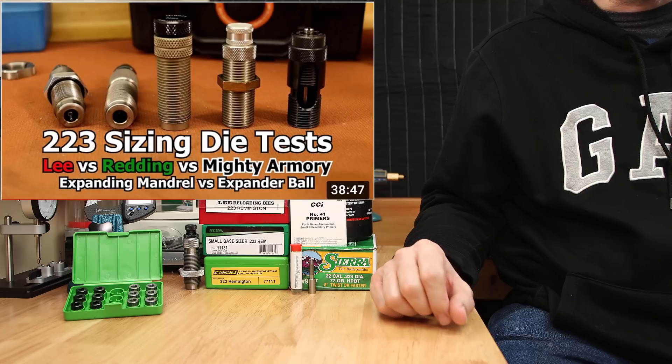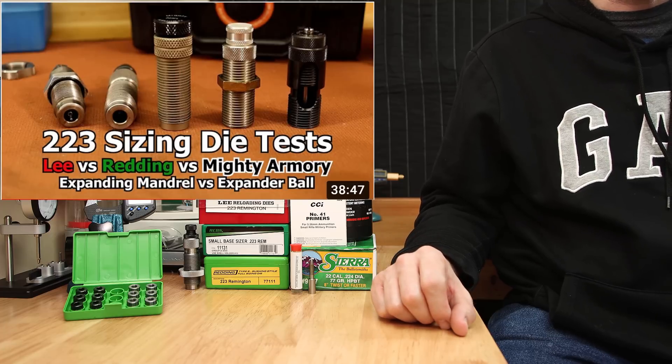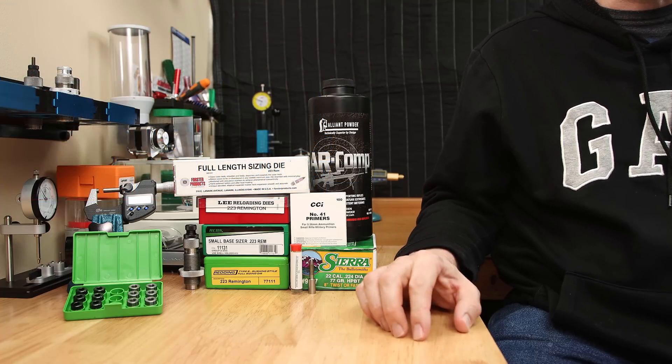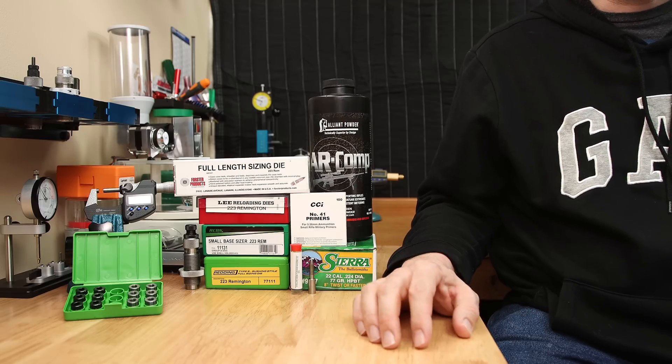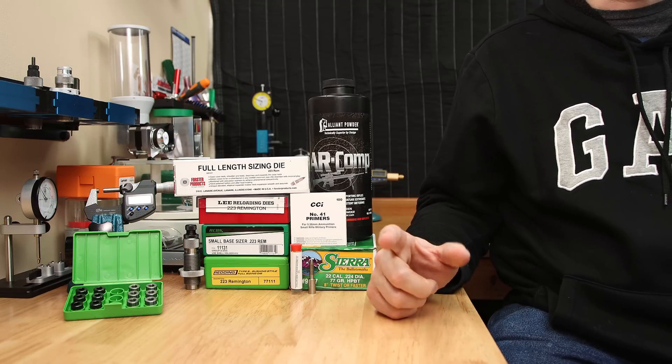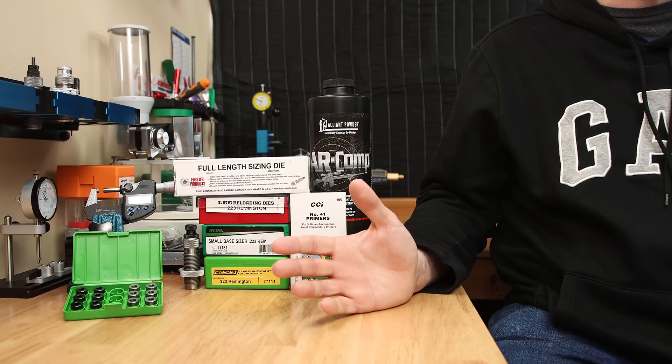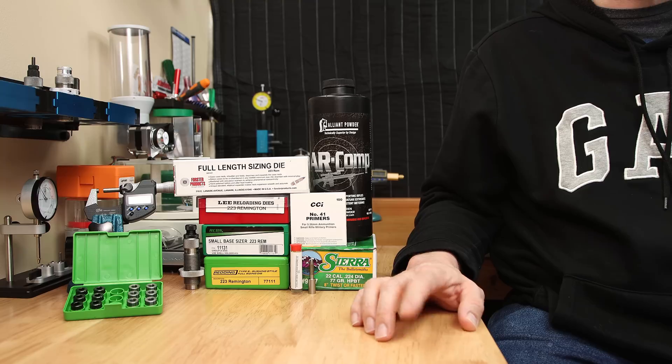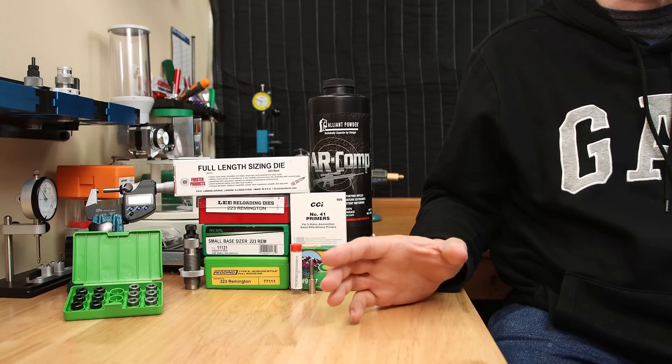I got inspired from one of Johnny Reloading Bench's videos on .223 sizing dies and decided to see if we could find out why one method would perform better than another and more importantly why that was. You guys certainly have your opinions on why your way is the best, and if you're happy with your performance I certainly don't care if you change. But today we're on a mission to try and understand why it seems that some combinations just seem to work better than others.